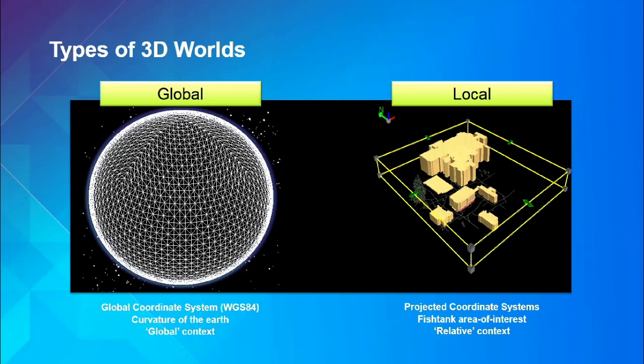Types of 3D worlds: there are basically two — global and local. In ArcGIS 10X, global is ArcGlobe and local is ArcScene. In ArcGIS Pro you have a 3D view and can flip between them very easily — just author it once and it's a viewing mode choice. Global is useful if you have global extent data or where curvature of the earth is important, like looking out from a mountain top, or for shipping lanes. Local is useful for small areas — a fish tank area of interest, a mine site, a building — where everything is in a relative context.